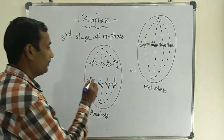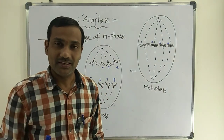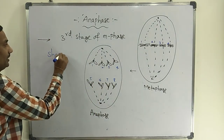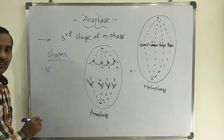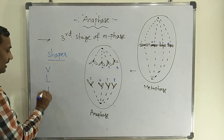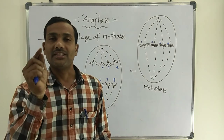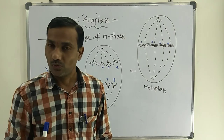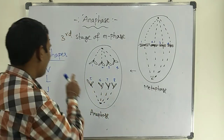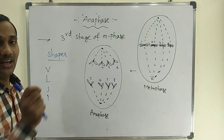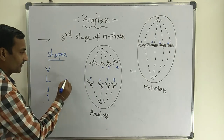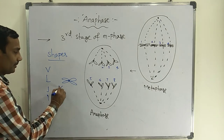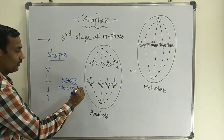In anaphase, if you observe the cell, all chromosomes appear in different shapes depending upon the position of the centromere. Chromosomes may appear V, L, J, or I shape. If the centromere is located at the center of the chromosome, that chromosome appears as a V-shape — this is the metacentric chromosome.